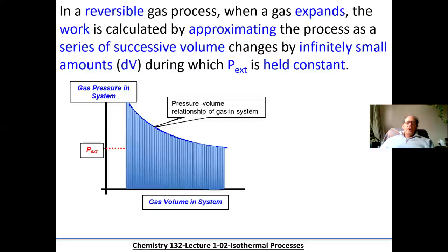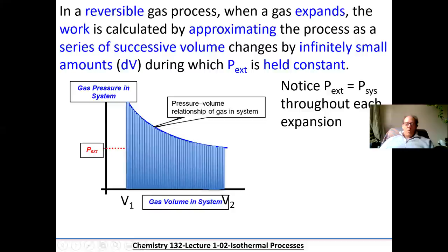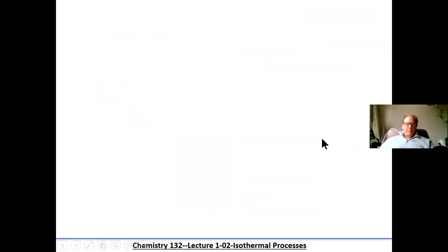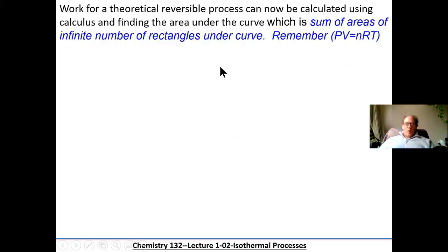As you've learned in mathematics, we can calculate the areas of these tiny little rectangles using calculus. We're going to set the external pressure equal to the system pressure inside the gas as it expands. From V1 to V2 there was a change — an infinite number of changes. The change in volume from V1 to V2 can be represented by those incremental dV changes, and we can use calculus to develop a formula to calculate the work done.